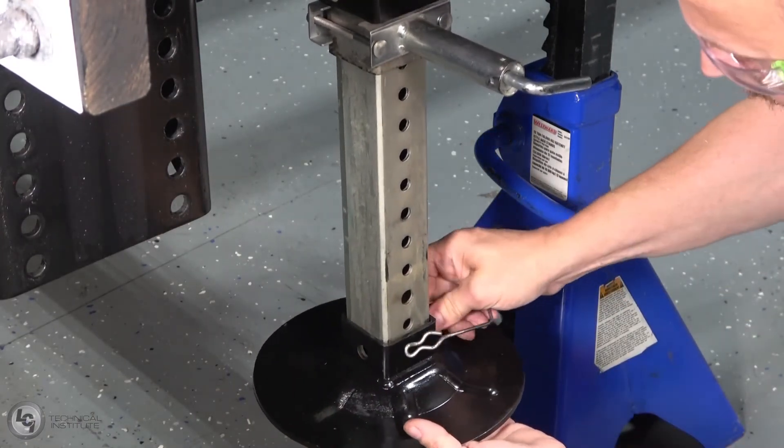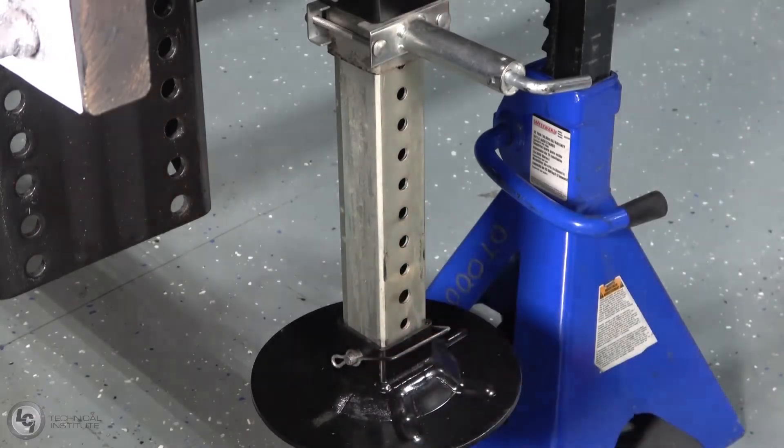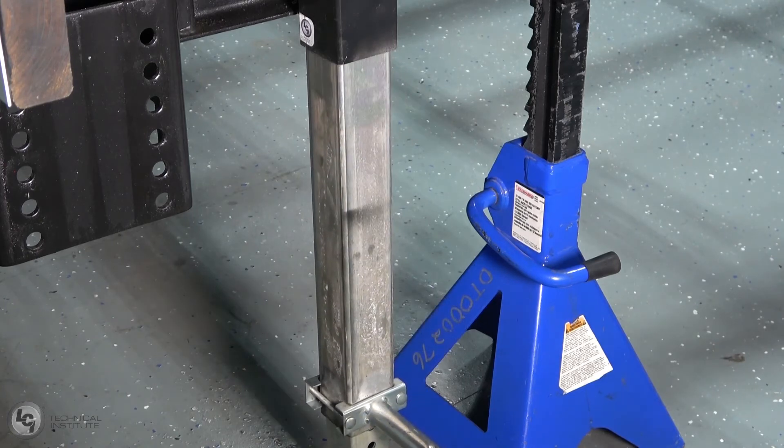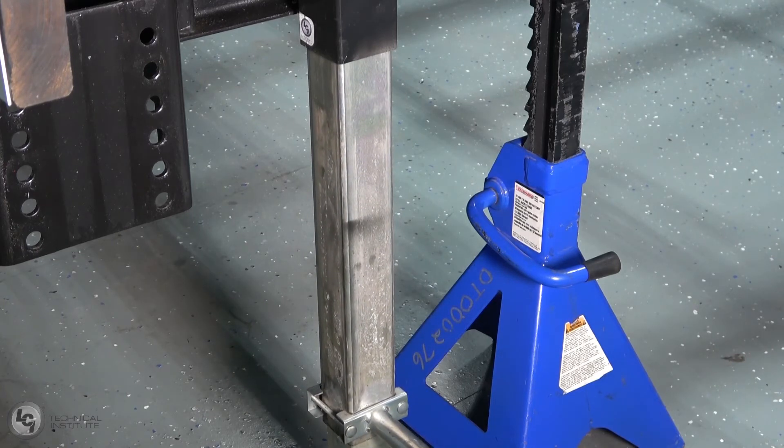Then replace your foot pad and secure it with the snap pin. Lower the landing gear back to the ground. Once the jacks are again taking the weight of the unit, lower and remove the jack stands from the unit.